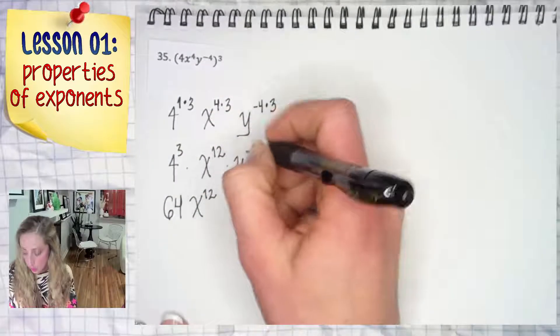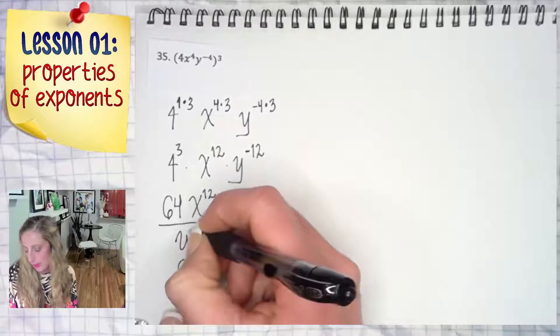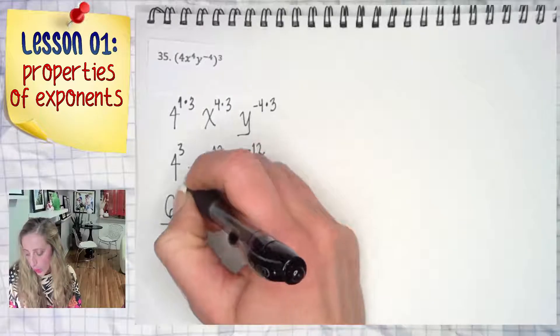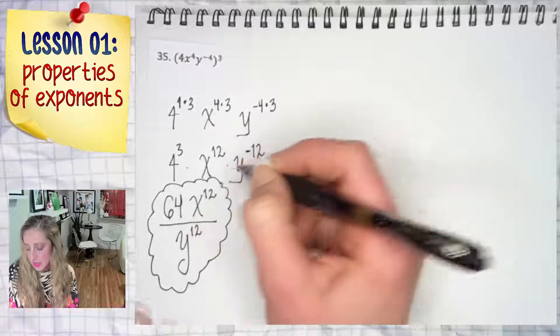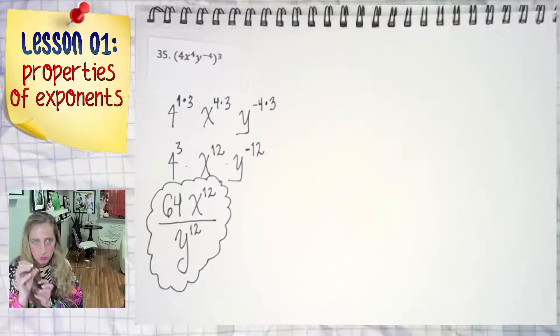So we're going to relocate it. It's going to go down to the denominator, and now the power becomes positive. Remember when you do this type of move, it's only the exponents that change from positive to negative in this transaction.